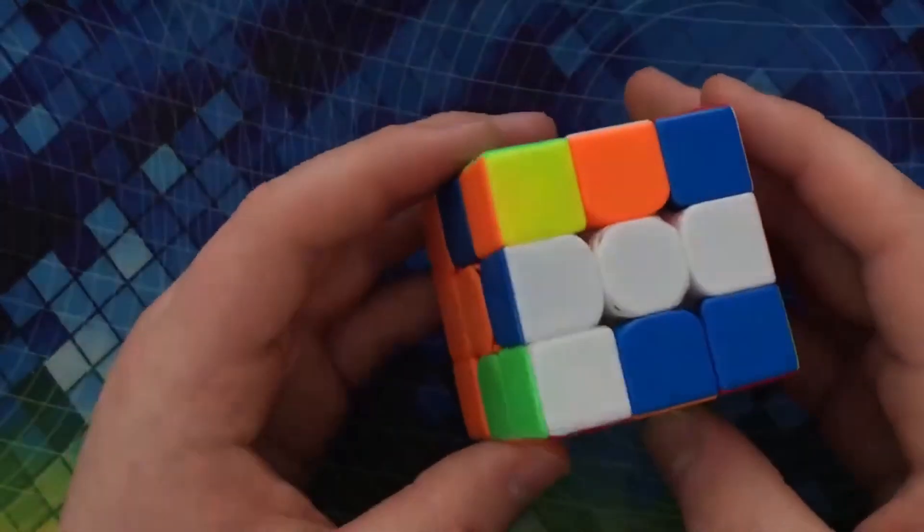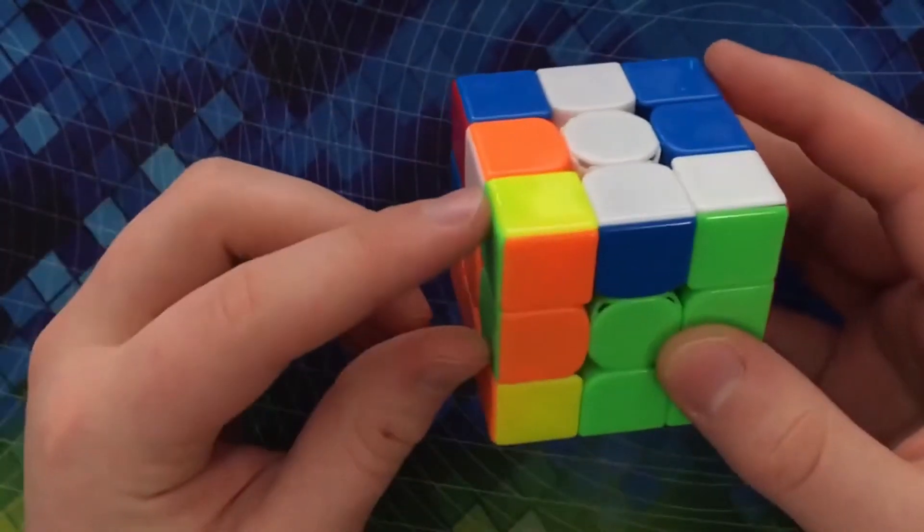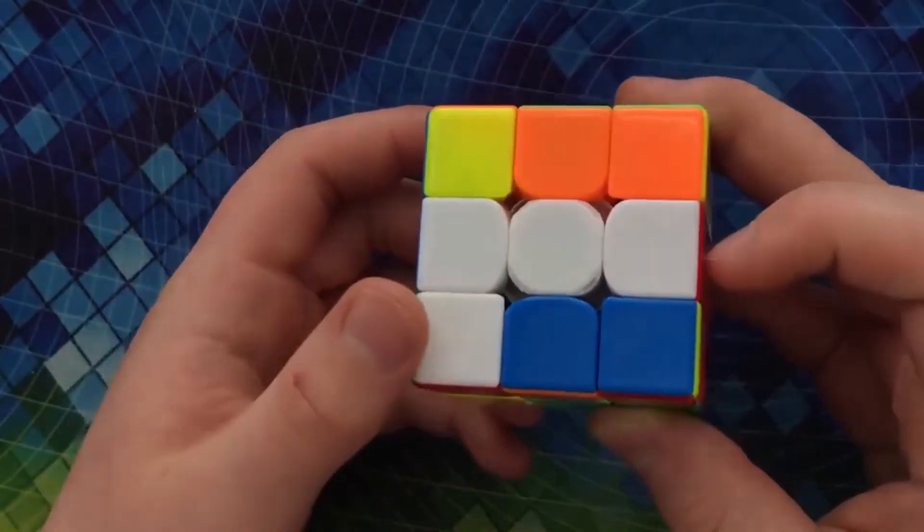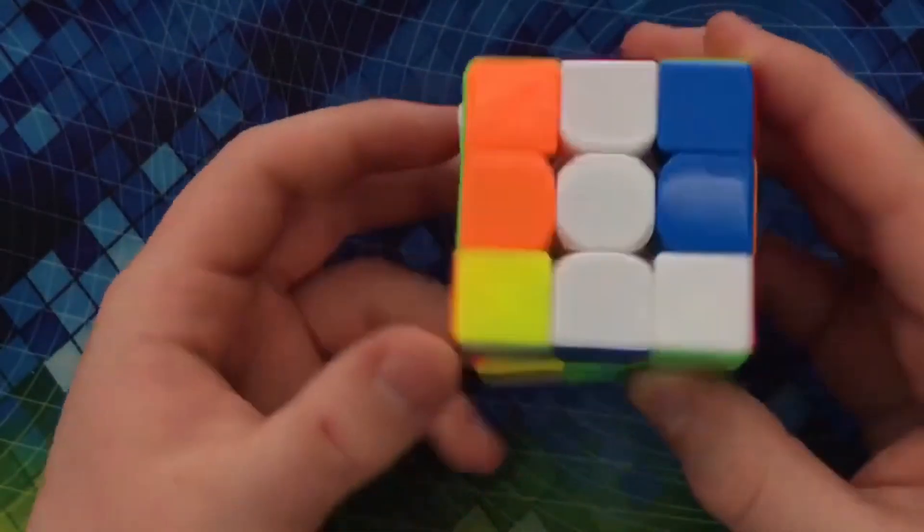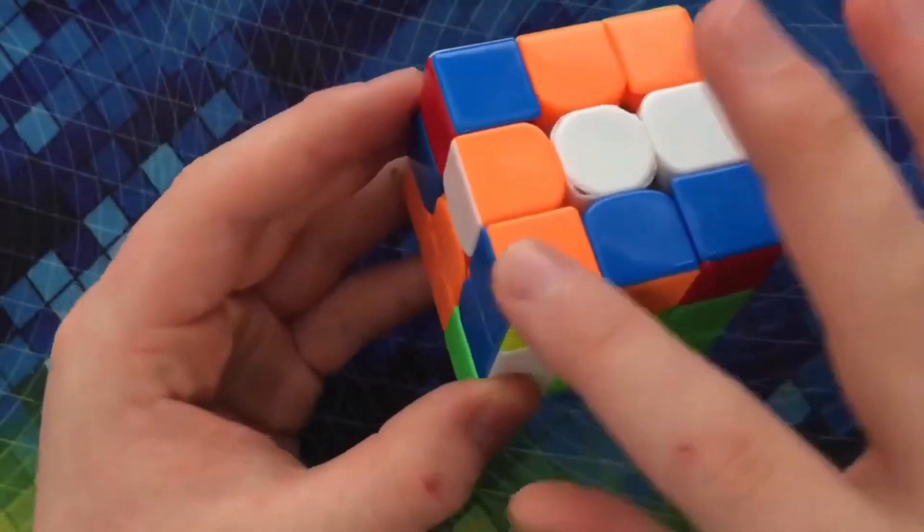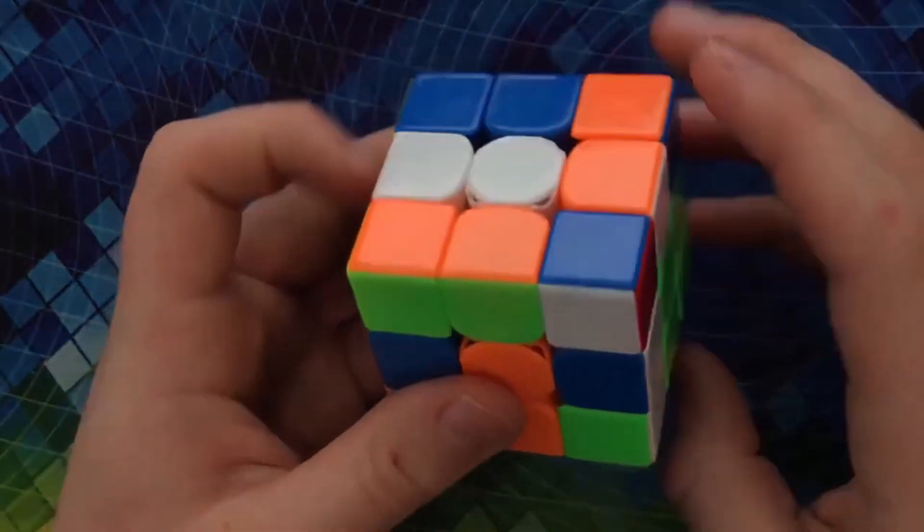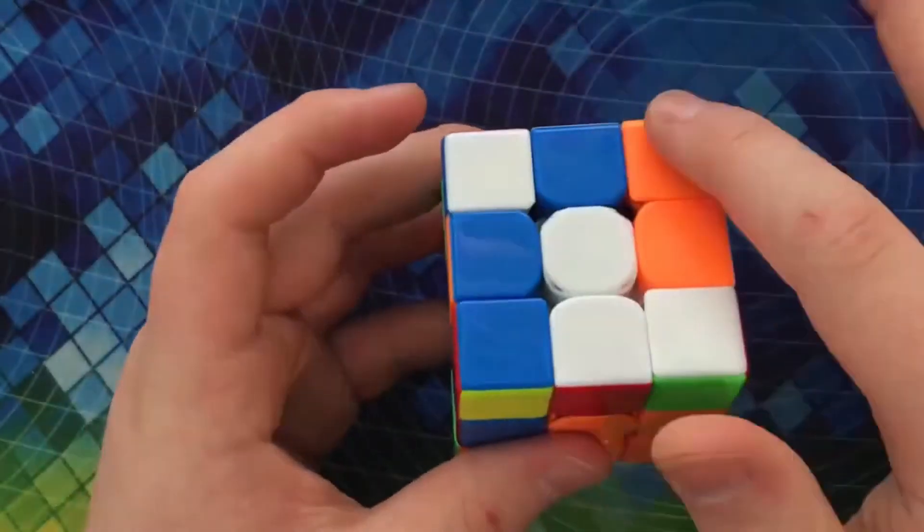What I did from here - in inspection, I saw that this pair would be here. So I immediately went into this, and while I was taking this out of the slot, I saw this. I knew that when I inserted this pair, these would be a 3-move pair.